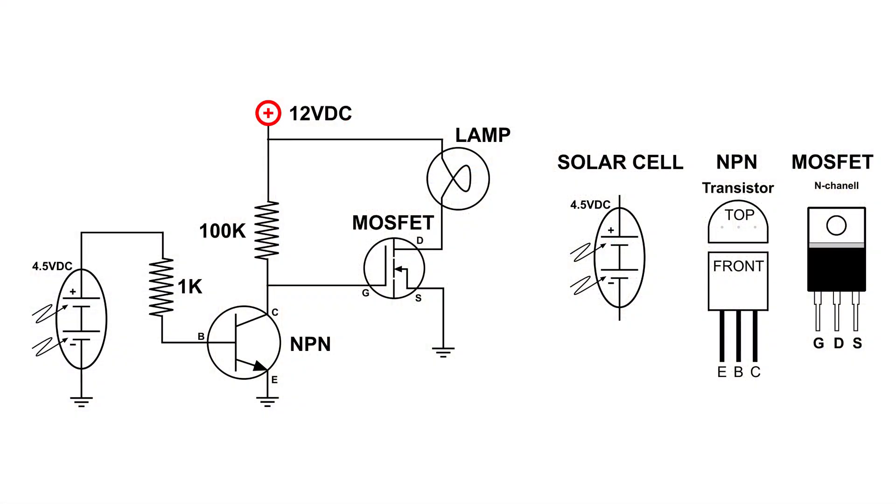When light is hitting the solar panel, it is producing positive voltage which travels through that 1k-ohm resistor over to the base of the NPN transistor. That positive voltage on the base drives that NPN transistor into saturation.